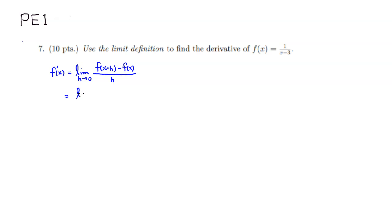Using function notation, I'll write the limit as h approaches 0. For f of x plus h, wherever we see x in the formula, we replace it with x plus h. So we get 1 over x plus h minus 3, then minus f of x which is 1 over x minus 3, all over h.